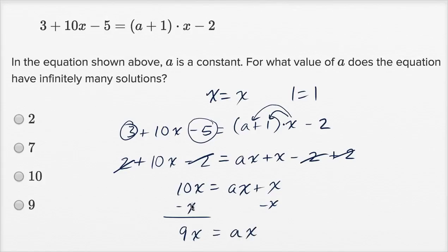So how could I have an infinite number of solutions, an equation that's going to be true for any x? Well, if a was equal to nine, because if a equals nine, then you're going to have 9x equals 9x. That's going to be true for any x. Any x times nine is going to be equal to that same x times nine again. You're going to have an infinite number of solutions. So a needs to be equal to nine.